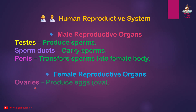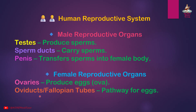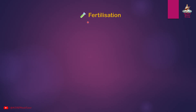Female reproductive organs: Ovaries produce eggs. Oviducts (Fallopian tubes) are the pathway for eggs. The uterus is where the baby develops. Fertilization is the fusion of a sperm and an egg to form a zygote.